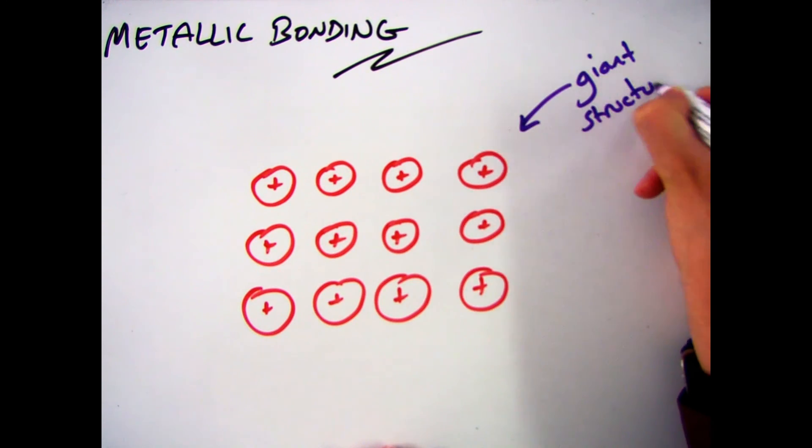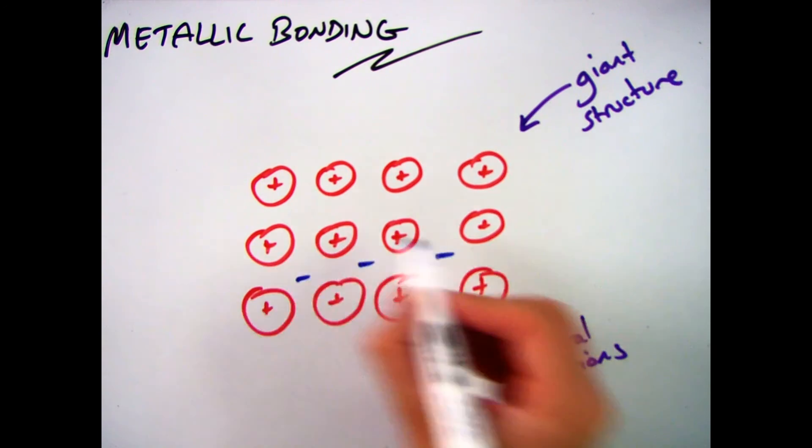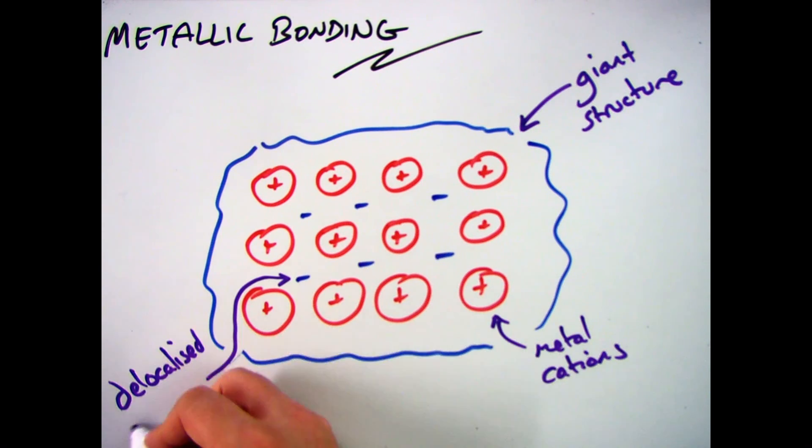So when we talk about the structure of metals we say that they have a giant structure and that structure is made up of lots and lots of positive metal cations surrounded by a sea of delocalised electrons.